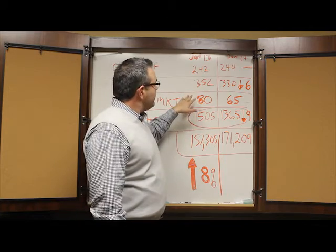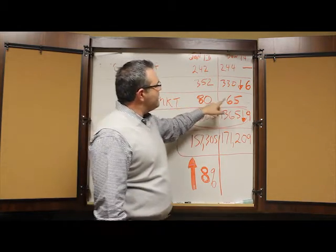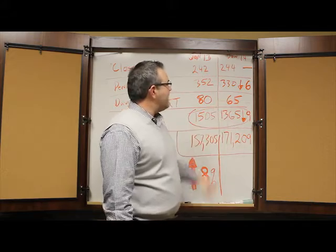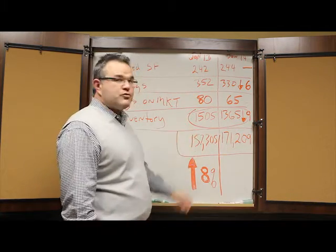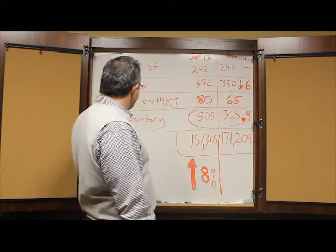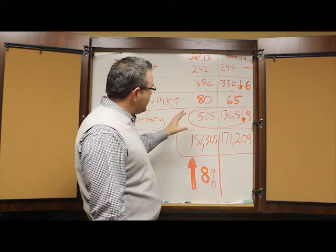Days on the market, this is interesting, 80 days last January was the average home, 65 this January. So that number is shrinking. I believe the reason that number is shrinking goes to the next category, inventory is shrinking.